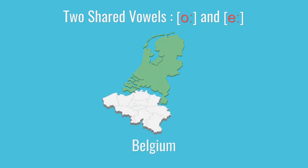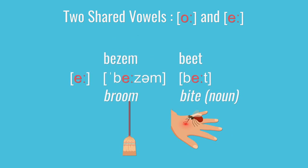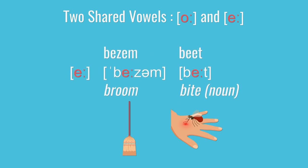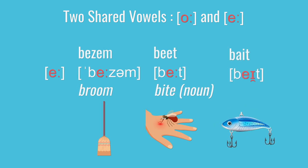In standard Belgian Dutch, these vowels remain steady and unchanging. Because of this regional variance, it's standard practice to transcribe these vowels in IPA as a single vowel followed by a colon-looking vowel lengthener mark, where every Dutch person understands that if you're going for a standard Netherlands accent, you'll put in some vowel gliding automatically. The next similar vowel is E as in bezem and beet, which is basically the same as English's E as in beet.